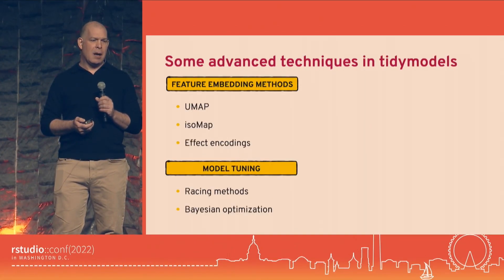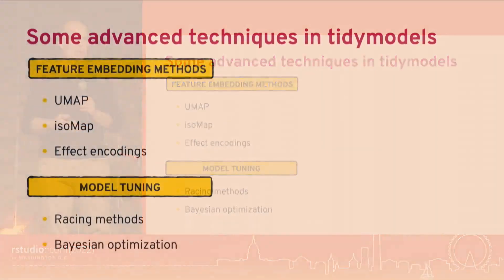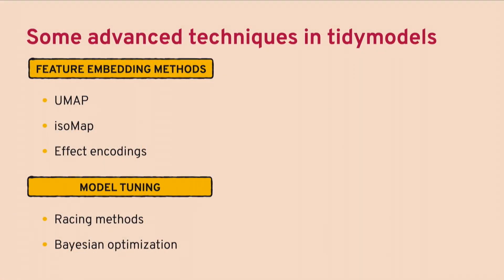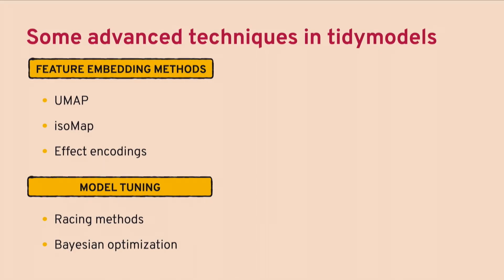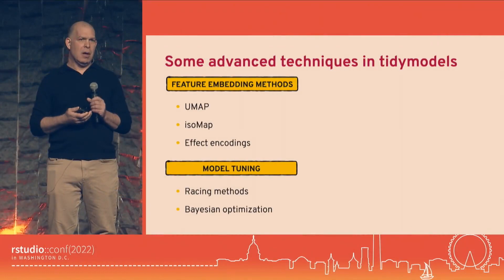As examples of techniques related to effectiveness — there are things that aren't bleeding edge but are relatively cutting edge, coming from different parts of the literature. Some things in TidyModels come from the deep learning literature, and some interesting things from the computational chemistry literature we're using for other types of data. Examples include feature embedding methods — really fancy machine learning methods for dimensionality reduction — like UMAP, ISOMAP, and multidimensional scaling. We want you to be able to use them for any data and any model.